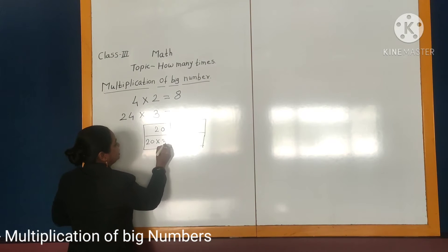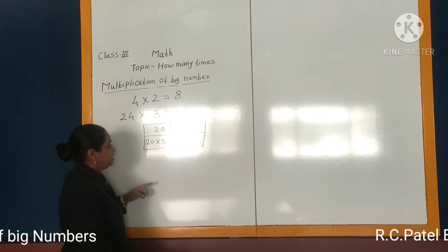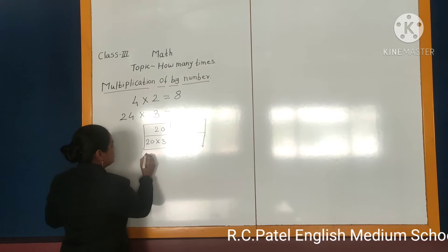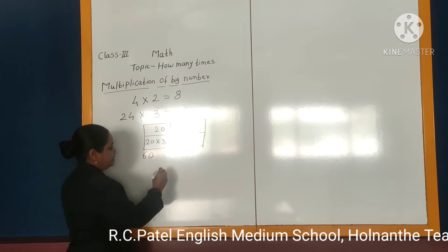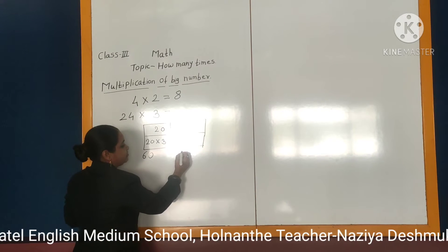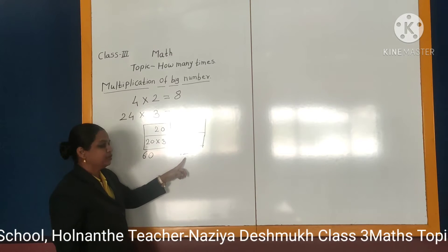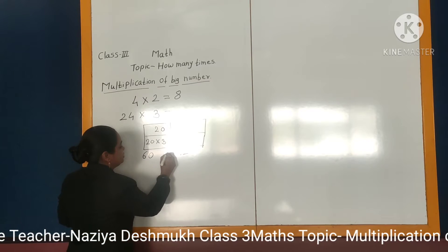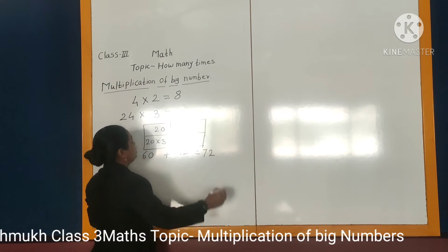20 multiplied by 3, and 4 multiplied by 3. What will be the answer of 20 multiplied by 3? 2 threes are 6 and one zero means 60. And 4 multiplied by 3 — the answer will be 12. Now we will do the addition of both these answers: 60 plus 12. We will get the answer 72.